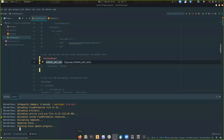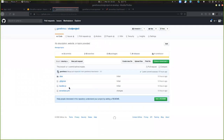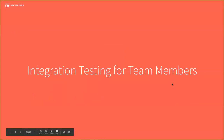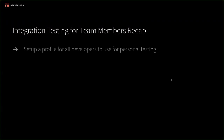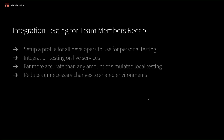I also have a Git repository with master and develop branches. This brings us to the integration testing recap: this setup allows a profile for all developers to use for personal testing, pushing code to a specific AWS account that doesn't interfere with staging or production. This means integration testing on live services — if I integrate with DynamoDB or S3, I'm actually testing in the cloud, which is far more accurate than local testing with simulated services, and reduces unnecessary changes to shared environments.